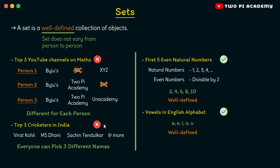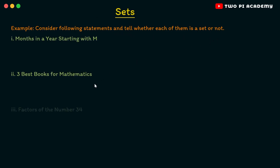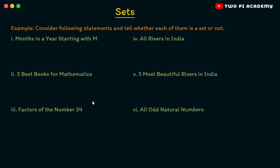I think this gives a general idea of what a set is. Now let's see an example problem. Consider the following statements and tell whether each of them is a set or not. The first one: months in a year starting with M. You know that every year has 12 months, and the only months starting with M are March and May. Every person will get the same 2 months, so therefore it is well-defined and hence it is a set.